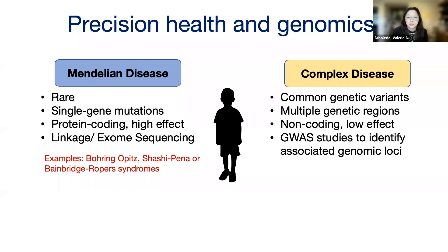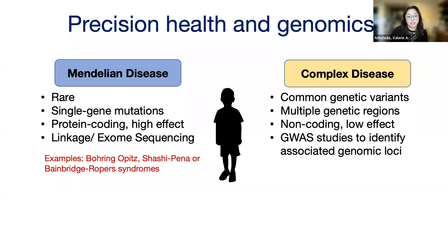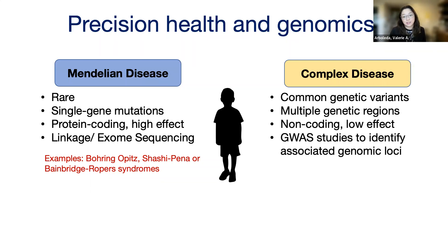When you look at complex disorders, these are more common in the population — things like diabetes and coronary heart disease. We know that genes matter because we can see family history, but it's usually not just a single gene causing the disease. For the vast majority of people, complex disorders are caused by common genetic variants, with multiple genetic regions affected. These genetic variants are often in non-coding regions — they don't actually encode for proteins, but they change how a gene is regulated and its levels of expression.